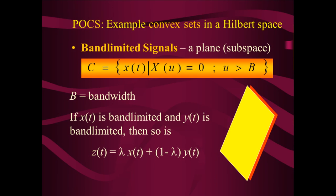Next we have something commonly used in electrical engineering: the band-limited signal. A band-limited signal is defined as one whose Fourier transform is zero outside some fixed interval; B is the bandwidth. If x(t) is band-limited and y(t) is band-limited, then so is lambda*x + (1-minus-lambda)*y — adding two band-limited signals gives a third band-limited signal. It turns out the convex set corresponding to band-limited signals is a plane. So we have another signal class that forms a convex set, and the idea of convexity in signal classes is relatively ubiquitous.